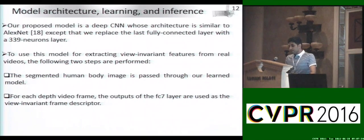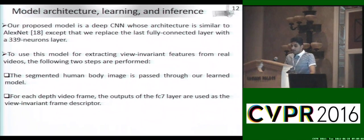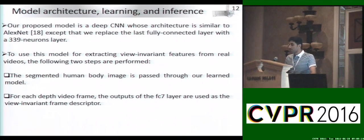Our proposed model is a deep CNN whose architecture is similar to AlexNet, except that we replace the last fully connected layer with a 339-neuron layer. For each pose in the dictionary, the corresponding synthetic depth images from all 180 synthetic cameras are generated using our proposed pipeline and assigned the same class label. Thus, our dataset consists of 339 human pose classes. To use this model for extracting view-invariant features from real depth videos, for each depth video frame, the segmented human body image is passed through our model and the outputs of the FC7 layer are used as the view-invariant frame descriptor.